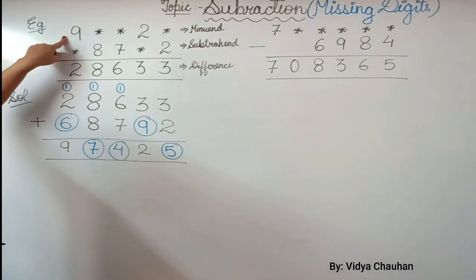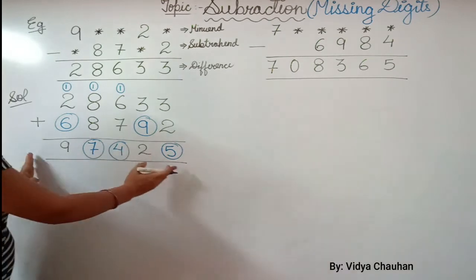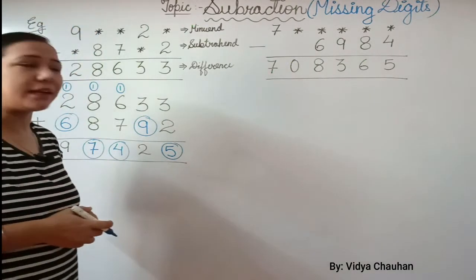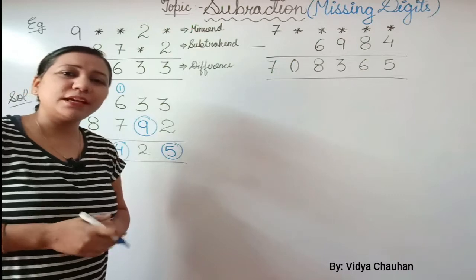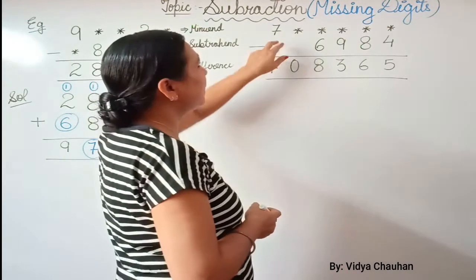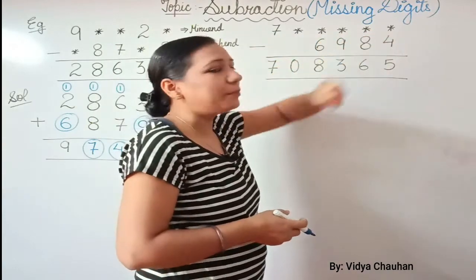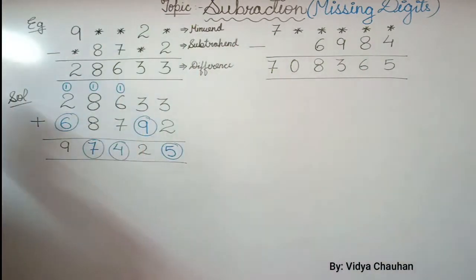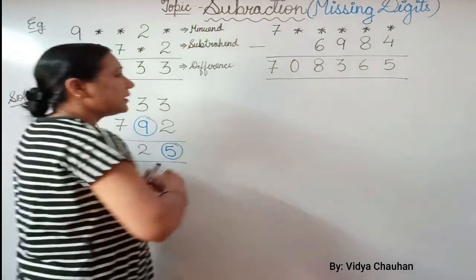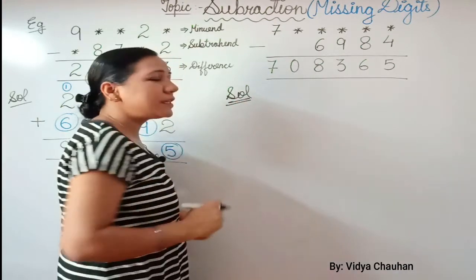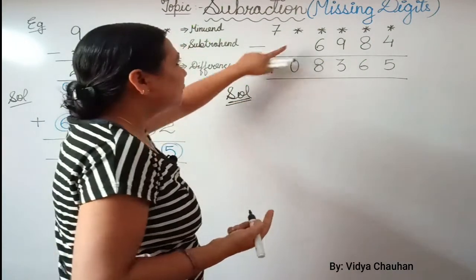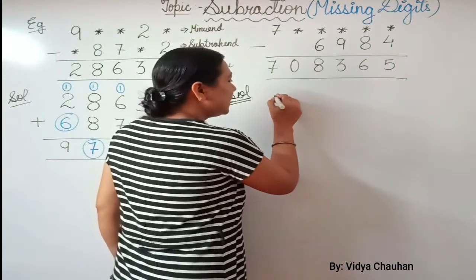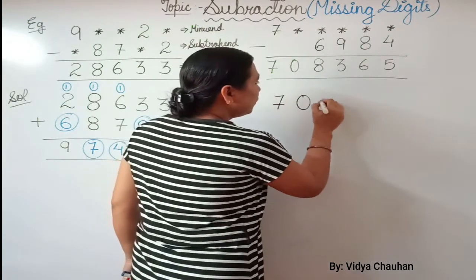You can now fill in all the missing digits in your question. This is the solution when both minuend and subtrahend have missing digits. Let me explain with one more example. In this example, only the digits in the minuend are missing — the subtrahend and difference are clearly given. There is no change in the method: we will add the subtrahend and the difference to get the minuend. It is 708,365 plus the subtrahend.